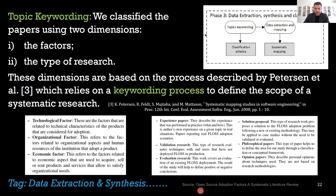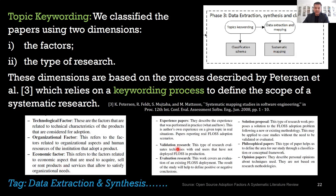Another example: in this paper, papers were classified using two dimensions — factors and type of research. These dimensions are based on the process identified by Peterson et al., which relies on a keywording process to define the scope of a systematic research. In this particular paper, they performed data extraction, synthesis, and classification. They looked for technological factors, organizational factors, and economic factors. These three things helped them to identify or answer their research question.